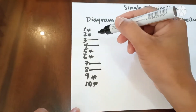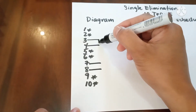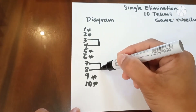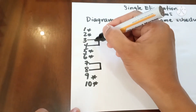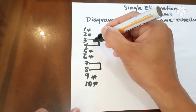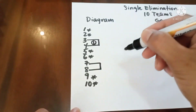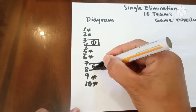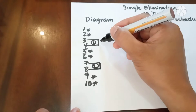Then we draw the vertical line and assign game numbers from the top: game 1, game 2. Then let us have the result.